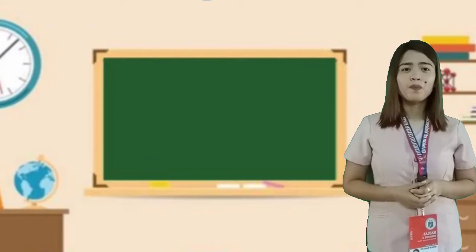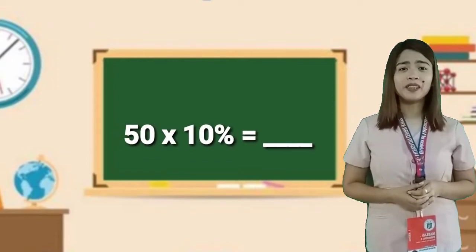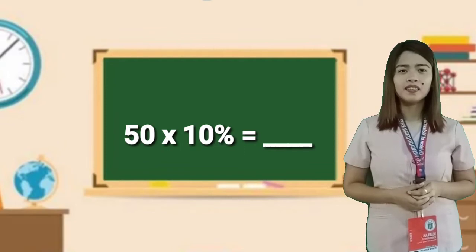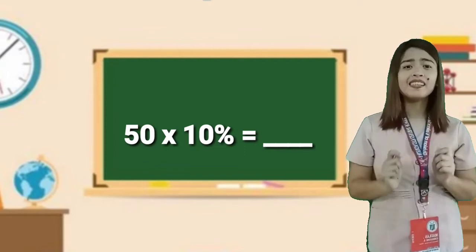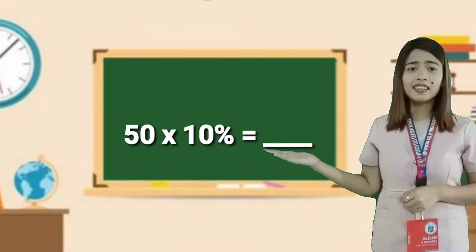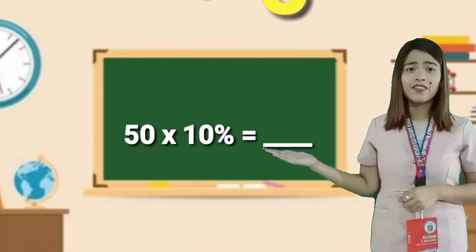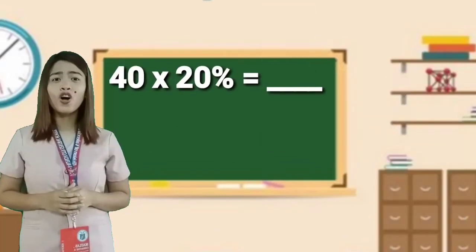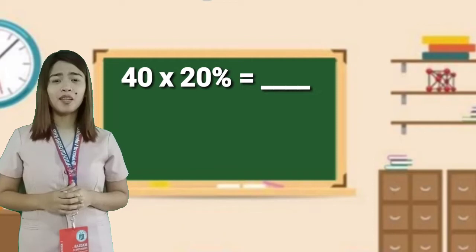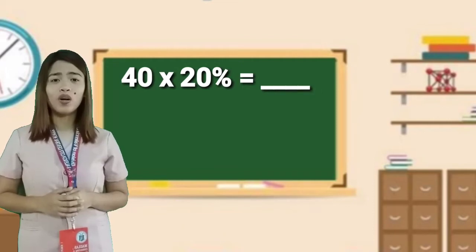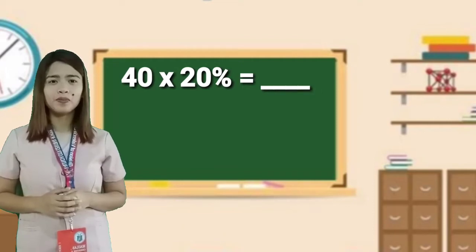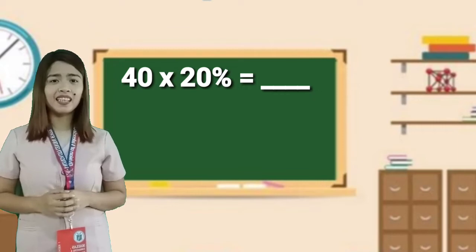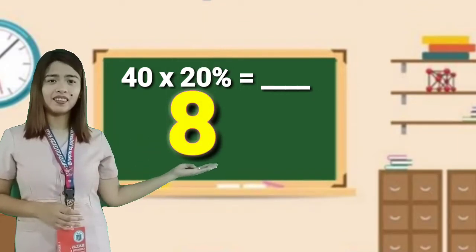Fifty times ten percent equals five. Forty times twenty percent equals eight.